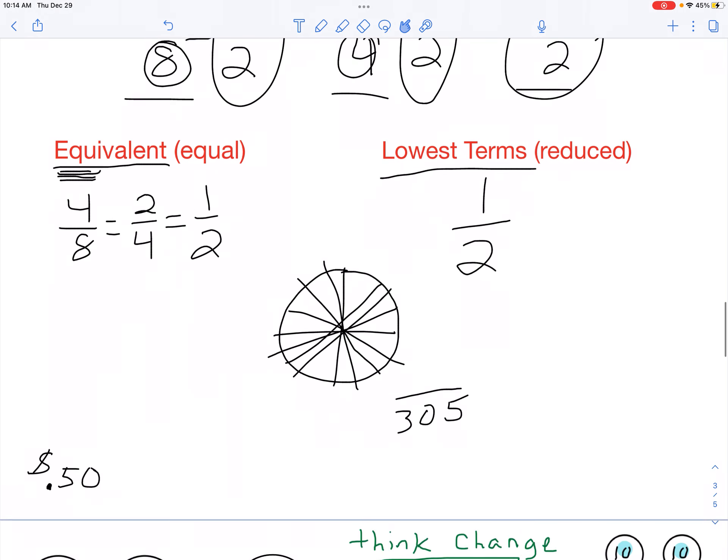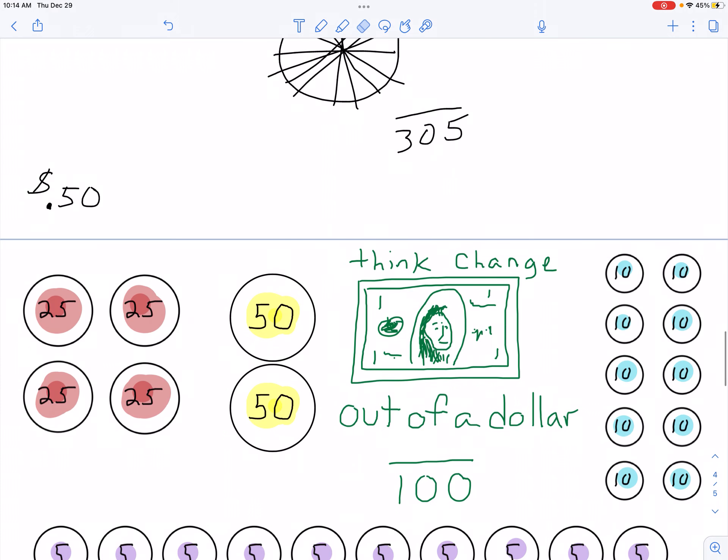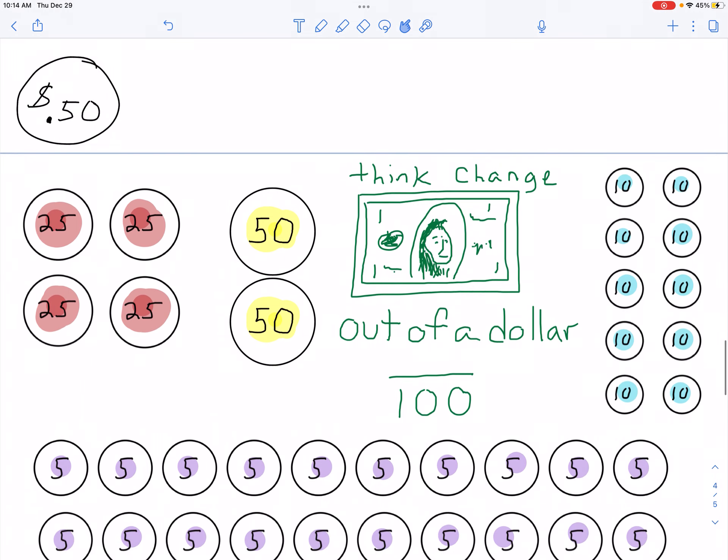Let's keep on going. If you don't like the pizza example, let's look at money. Okay, everybody likes money.